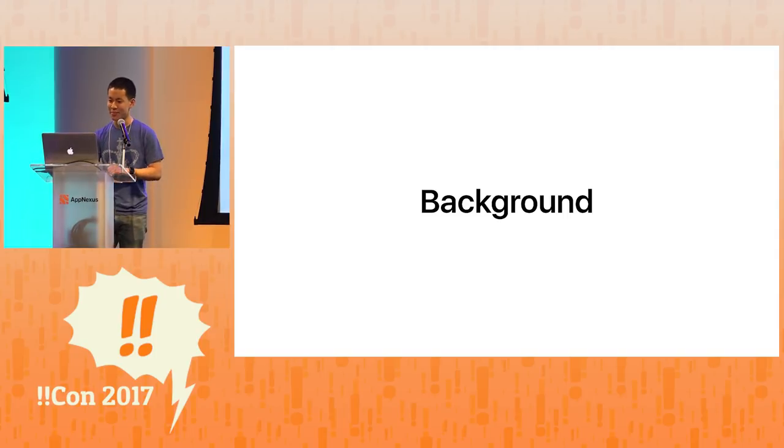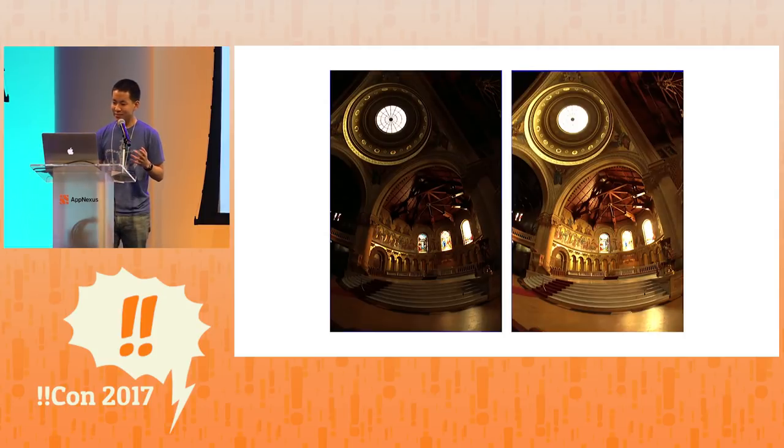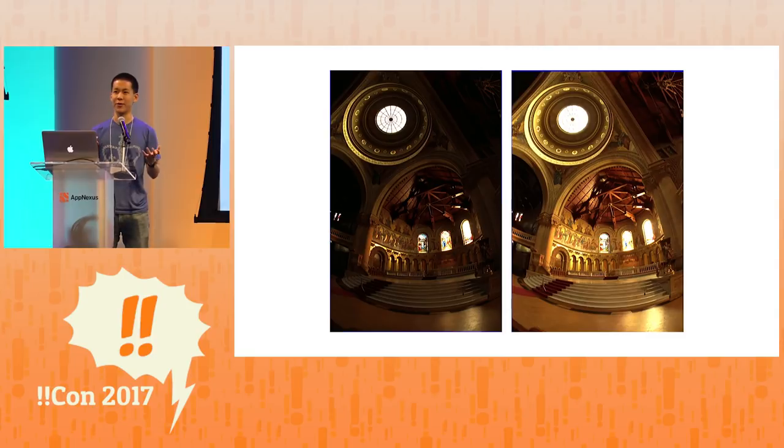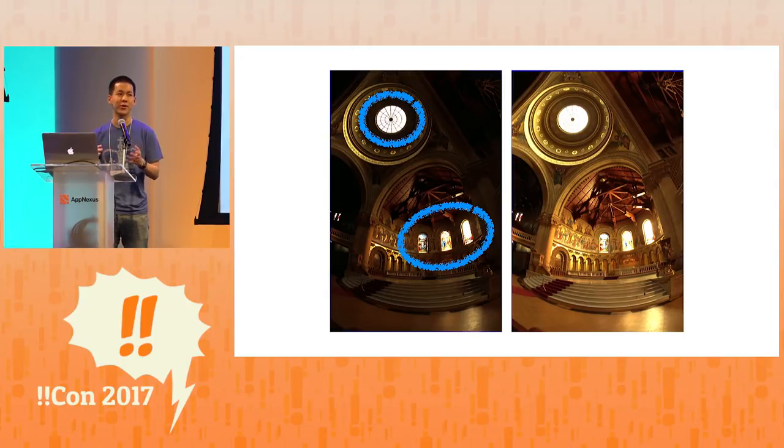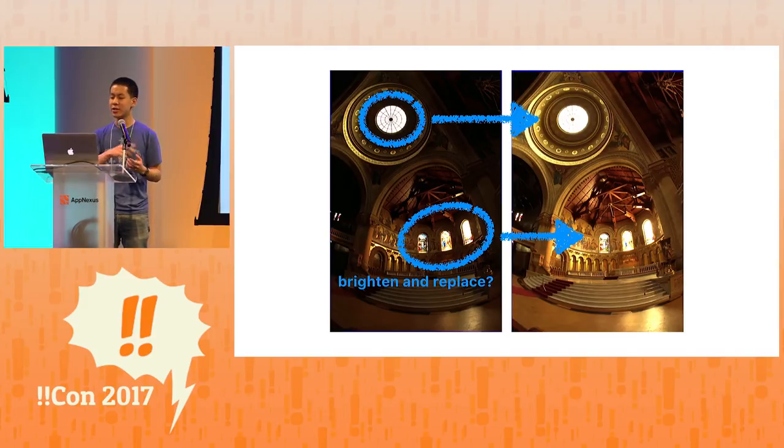So I'll just skip straight to the background. Let's try to think about what we might need for an HDR algorithm. So let's say we have these two pictures here, and one's brighter than the other. We'll just take these areas that are kind of blown out and copy and paste them from the darker picture, where they're a little more detailed, to the brighter picture.